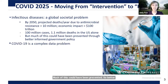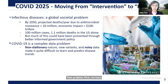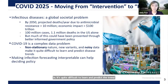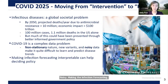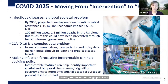Much of this could have been prevented through better-informed government policy. However, COVID-19 is a complex data problem. First, we have non-stationary data coming in. It's quite difficult to learn and predict the trend with lack of data and noisy data. Making infection forecasting understandable and explainable can help decision-making, and can help identify important geographical and temporal focus areas so that we can signal governments to make more effective resource allocation to prevent disease spread.